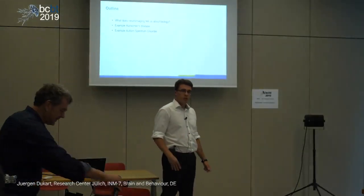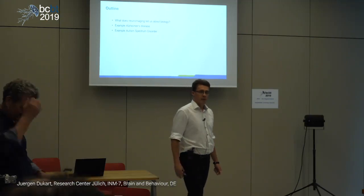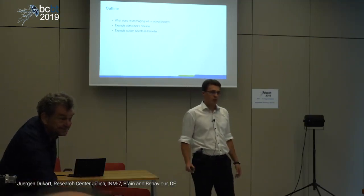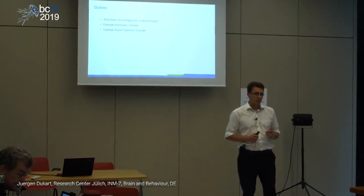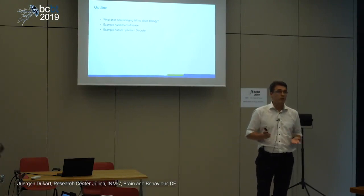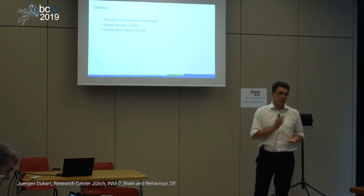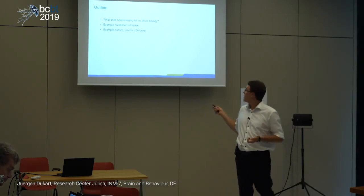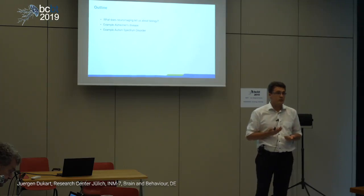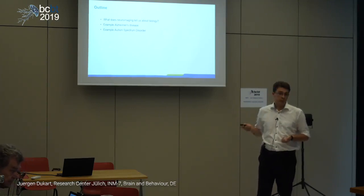Just briefly about the outline of my talk. First, I would like to understand who is working with neuroimaging data. So basically the outline: I will give you an introduction to neuroimaging — what we can and cannot do with it. Then in the second part, I will focus on two specific examples: one from neurology and one from psychiatry, namely Alzheimer's disease and autism spectrum disorder. I'll present work from colleagues on using neuroimaging to understand Alzheimer's disease, and then our recent work on improving understanding of autism spectrum disorder using these technologies.